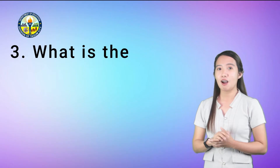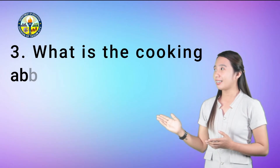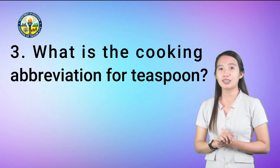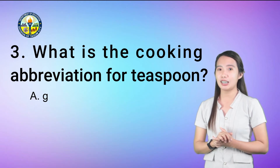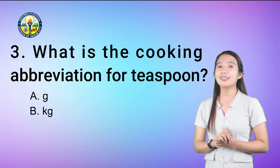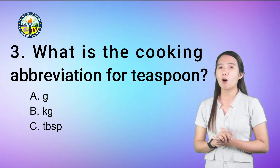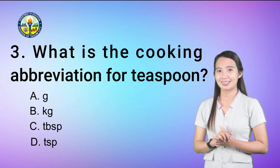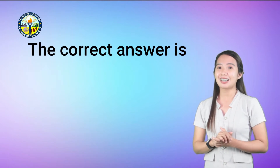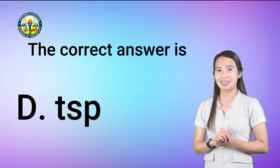Number 3: What is the cooking abbreviation for teaspoon? A. G, B. KG, C. TBSP, or D. TSP. The correct answer is letter D, TSP.